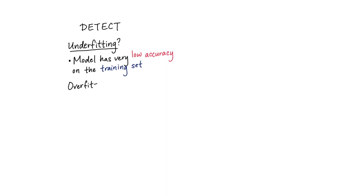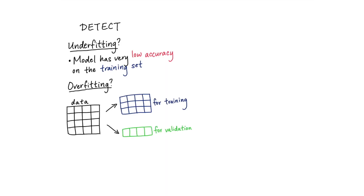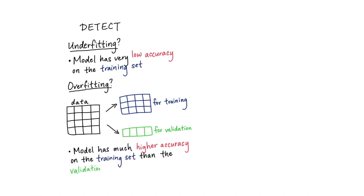It's usually pretty easy to tell when your algorithm is underfitting when you see that it has a very low accuracy on the training set. Detecting overfitting is less straightforward, but one way is to set aside another portion of the data called the validation set. This is not used to train the model, but every once in a while during the training process, you can check your algorithm's performance on this other data. A sign of overfitting is if your model has good performance on the training set but does significantly worse on the validation set. This usually means that you've learned a really good function on the training set, but it's too specific and doesn't carry over to data the model hasn't seen before, like in the validation set.